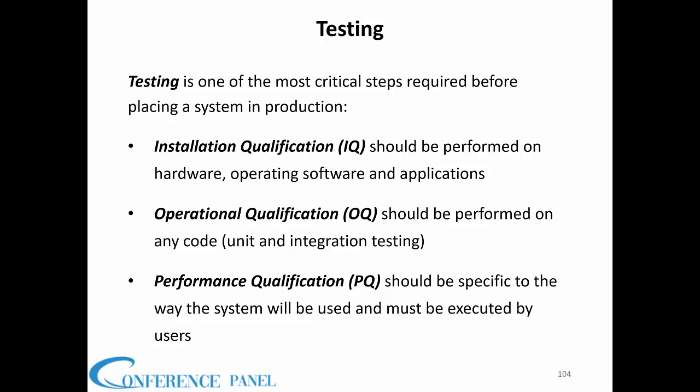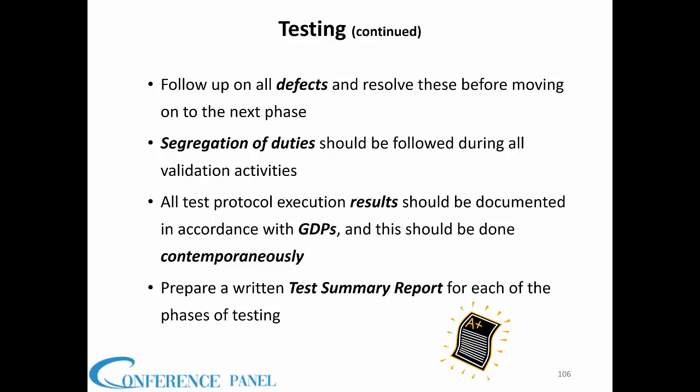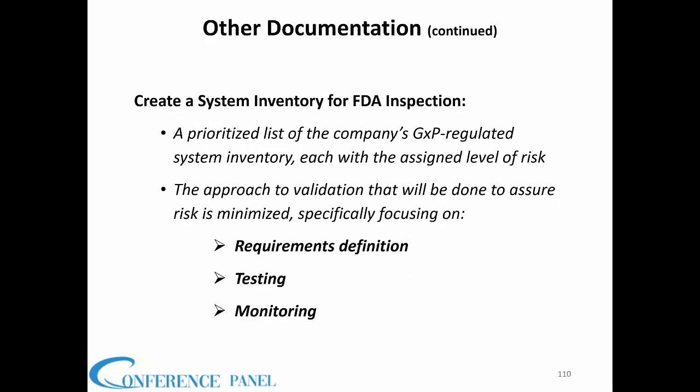For testing, the phases are IQ, OQ, and PQ — all phases of testing done in validation. PQ must be done by subject matter experts. When you test, if a defect or deficiency is noted, you must follow up, investigate root cause, remediate, and retest. There are RTMs — requirements traceability matrices — and a validation summary report. You should also maintain your GXP system inventory.